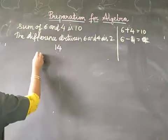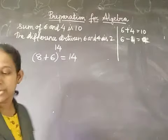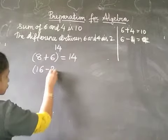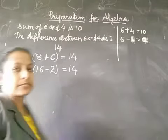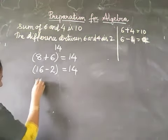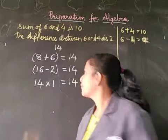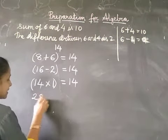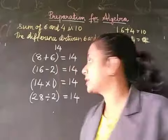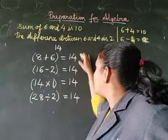We can get 14 by adding as 8 plus 6 is equal to 14. By subtraction, 16 minus 2 is also equal to 14. By multiplication, 14 multiplied by 1 is also equal to 14. And by division, 28 divided by 2 is also equal to 14.